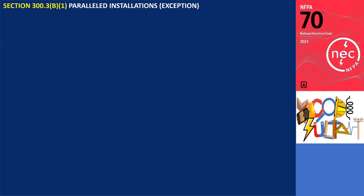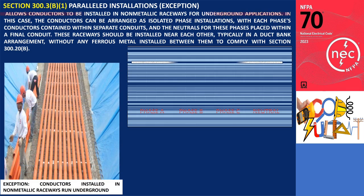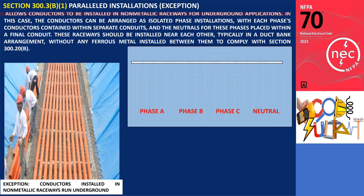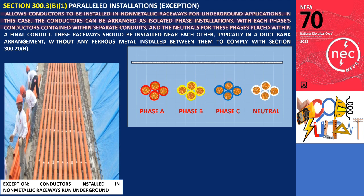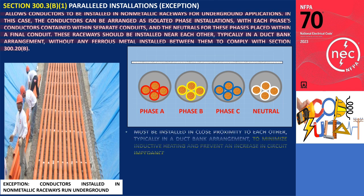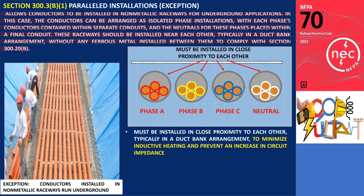There is an exception that allows conductors to be installed in non-metallic raceways for underground applications. In this case, the conductors can be arranged as isolated phase installations, with each phase's conductors contained within separate conduits and the neutrals for these phases placed within a final conduit. These raceways should be installed near each other, typically in a duct bank arrangement, without any ferrous metal installed between them to comply with Section 300.20.b. Installing raceways near each other is crucial to minimize inductive heating and prevent an increase in circuit impedance.